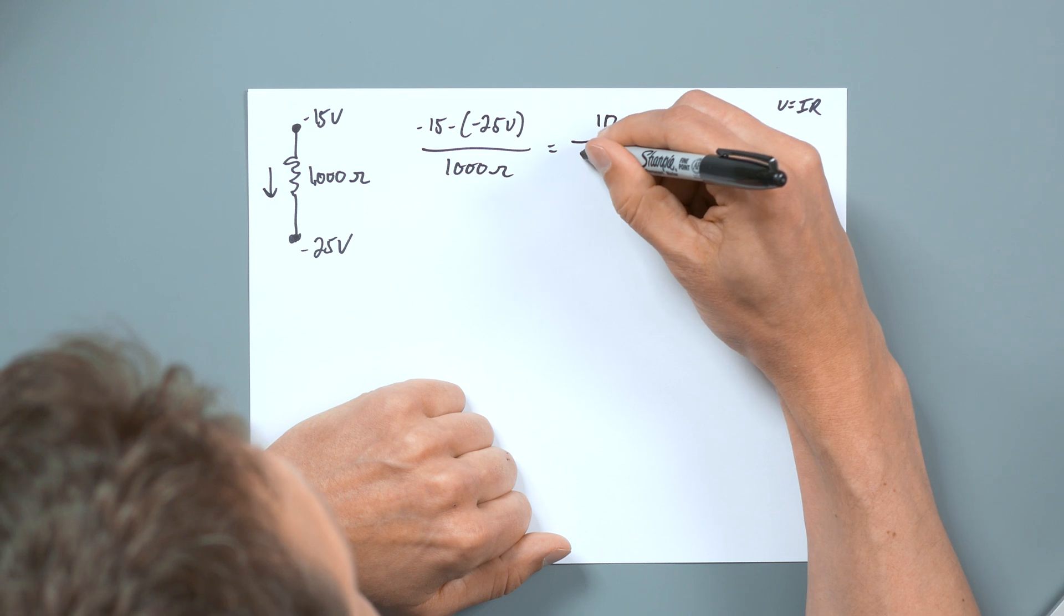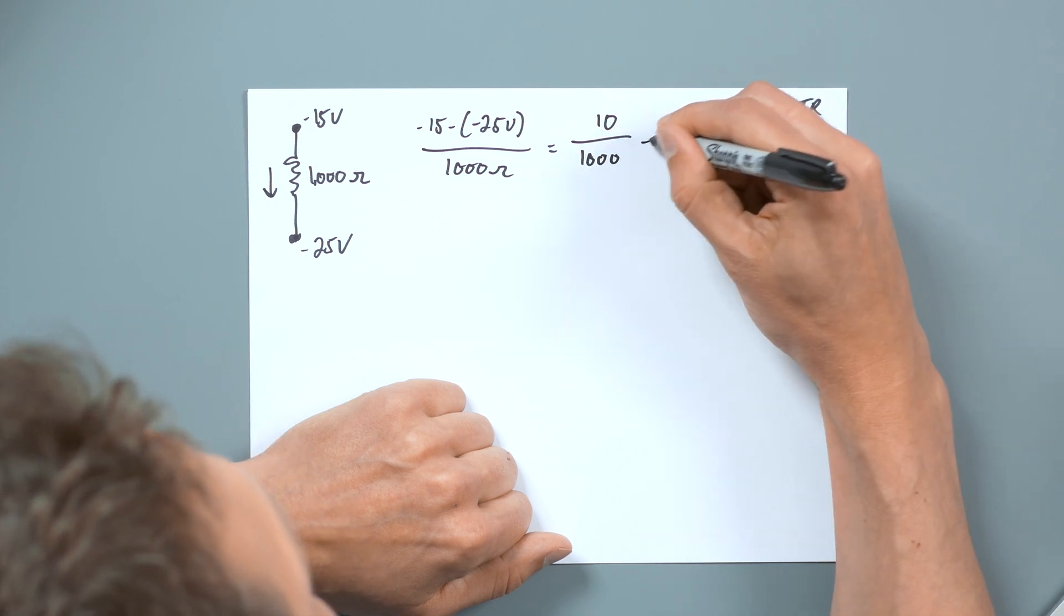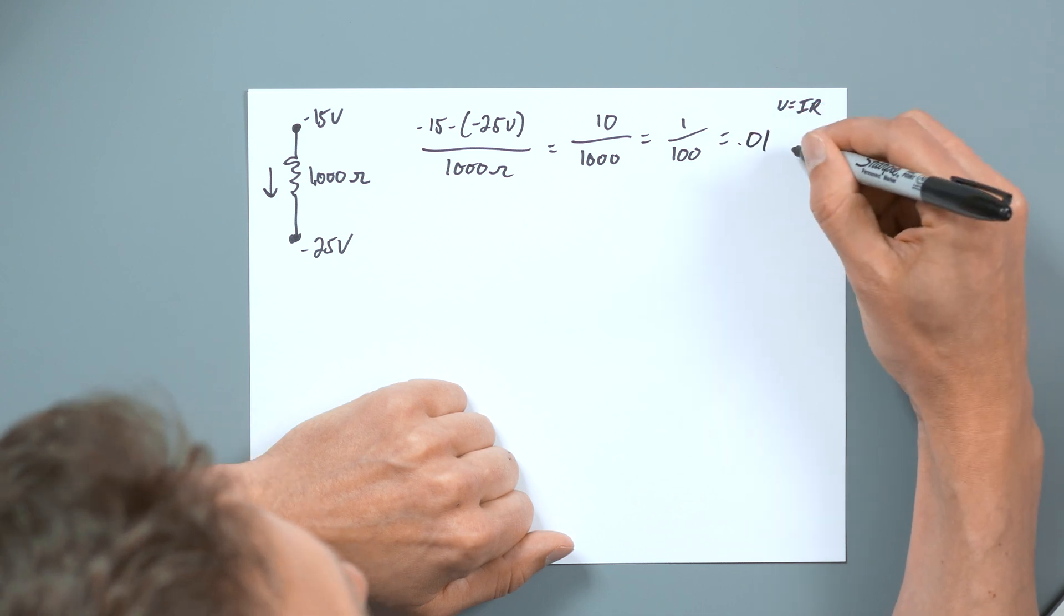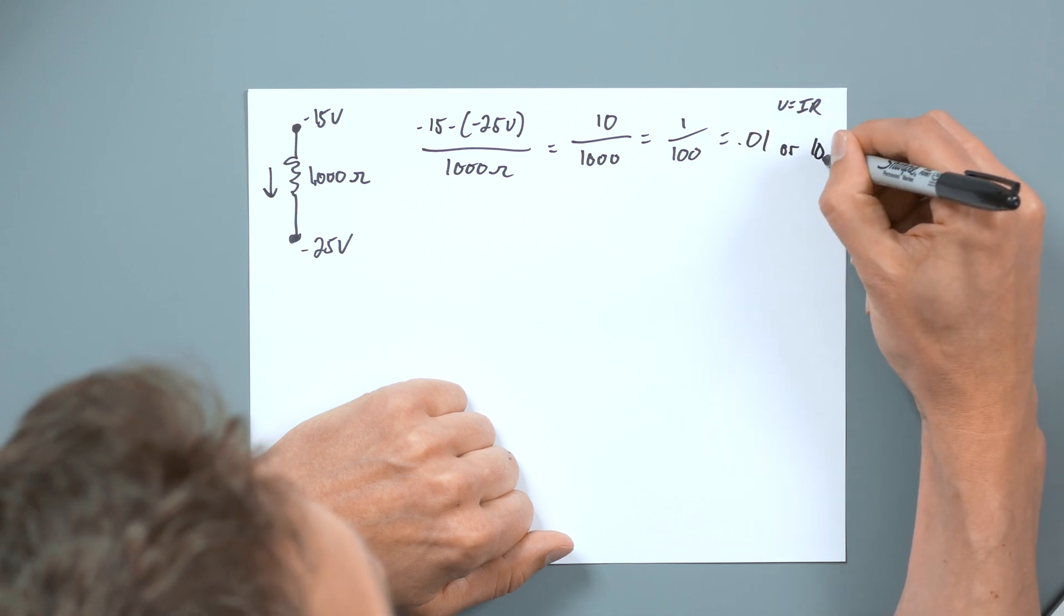You got 10 over 1000, which equals one over 100, which gives us 0.01, or 10 milliamps.